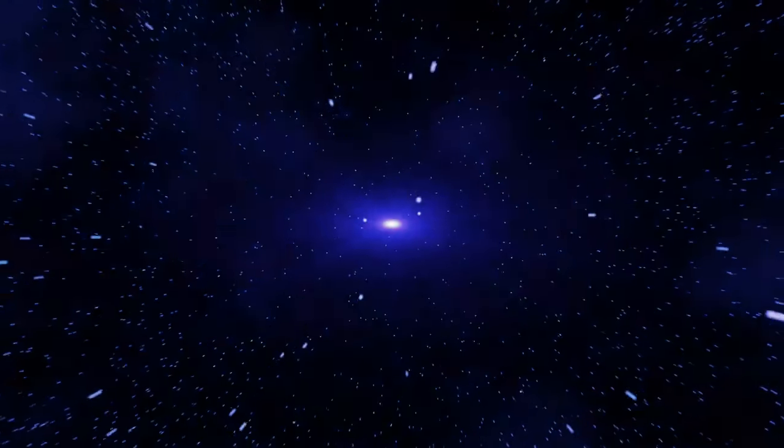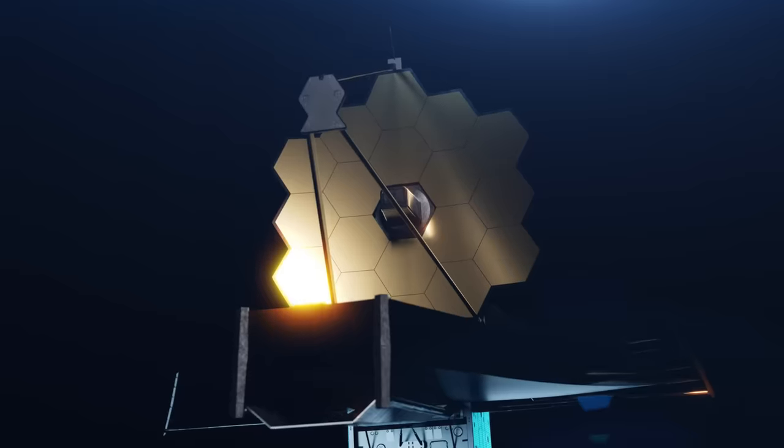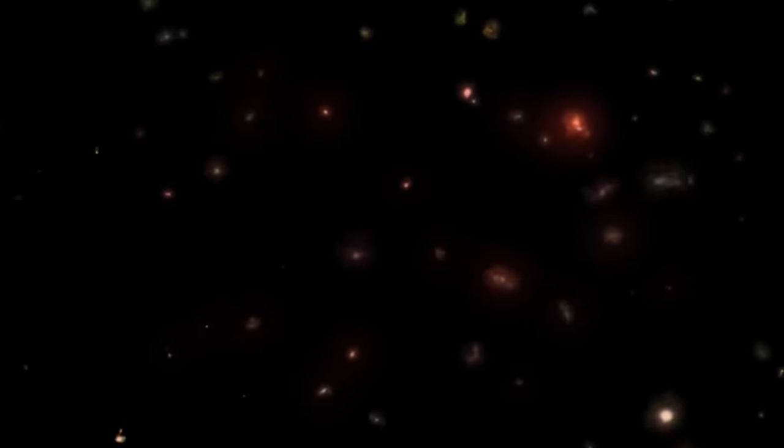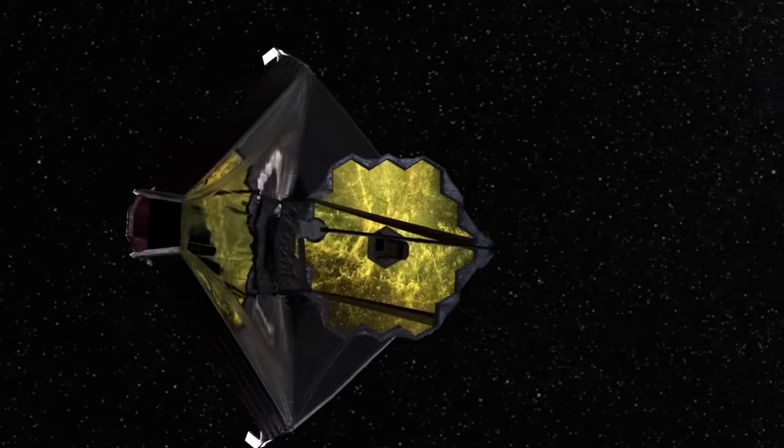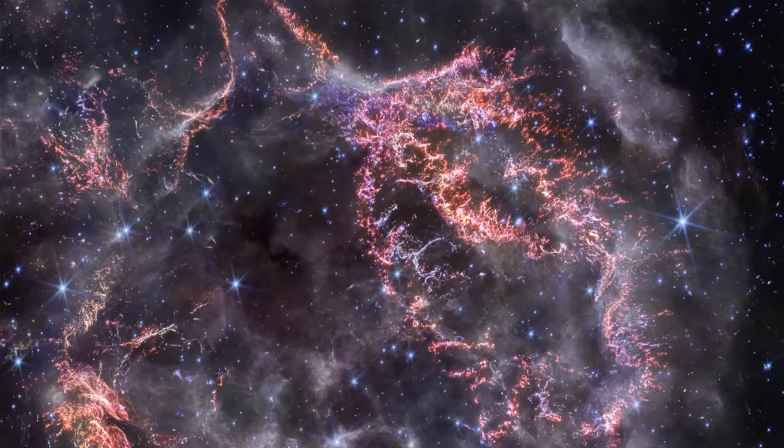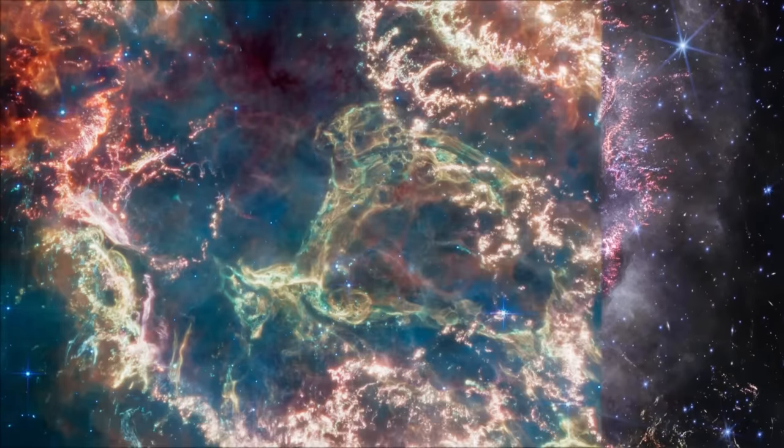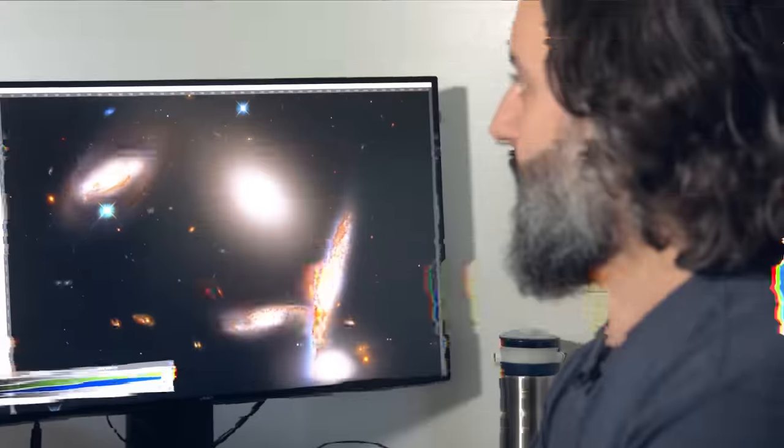Is it possible that the James Webb Space Telescope holds the answer to the long-standing mystery of how the universe began? The Big Bang Theory, which is the leading explanation for the origin of the universe, describes a rapid expansion from a hot, dense state. While Webb cannot directly observe the moment of the Big Bang, it helps us observe the aftermath of this event. Webb can also provide us with empirical evidence that can either support or challenge current cosmological models, including the Big Bang Theory. It is designed to observe light from the earliest stars and galaxies, which formed a few hundred million years after the Big Bang. By studying these early celestial objects, astronomers can gather more information about the conditions and processes in the early universe.